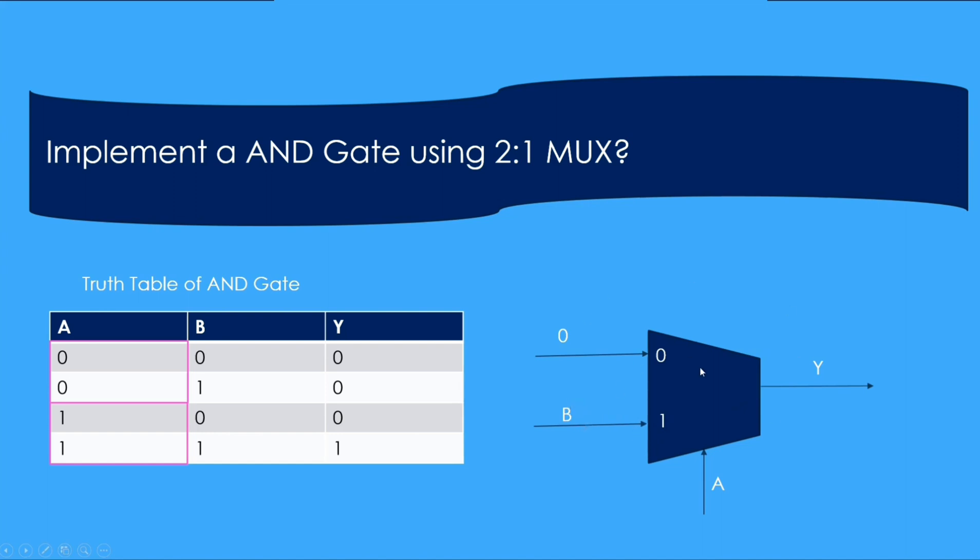So this is how it works at AND gate. Similarly, you can design any other gate. Make a truth table. Put A at the select line and see how Y can be found.